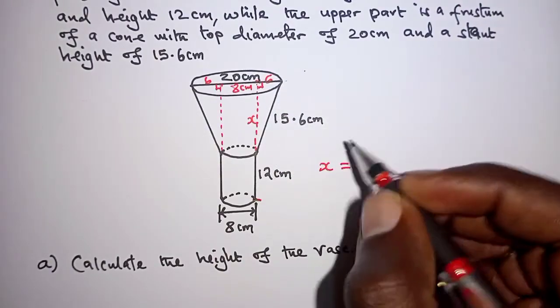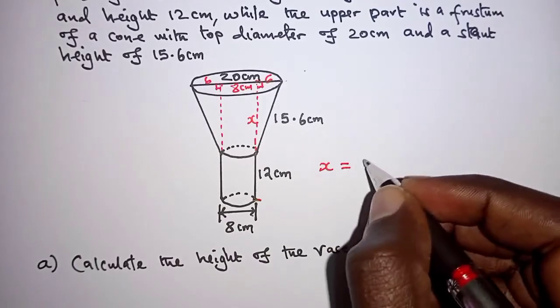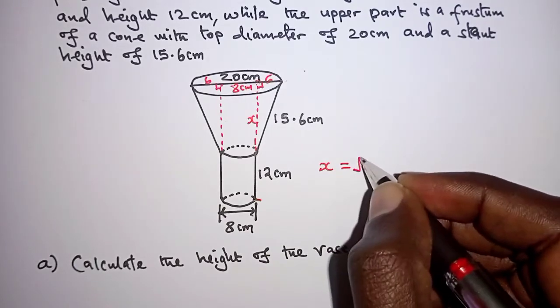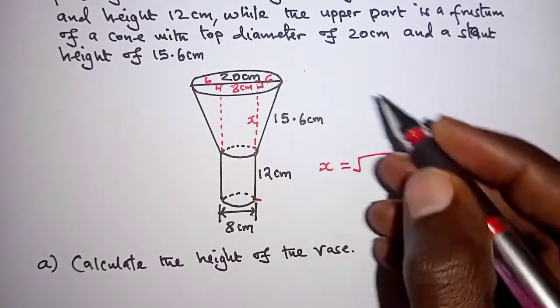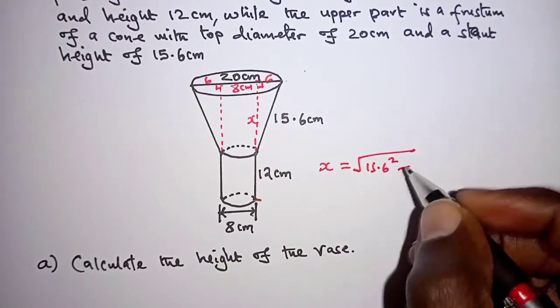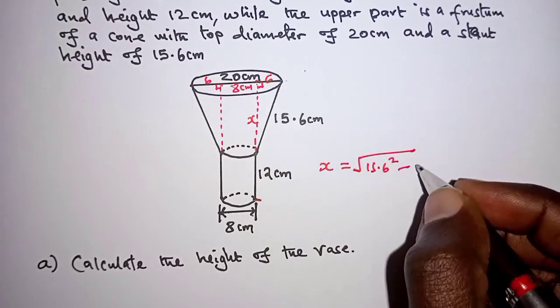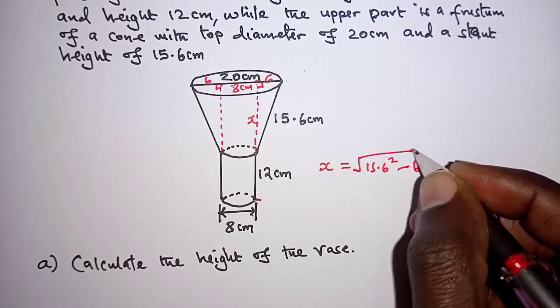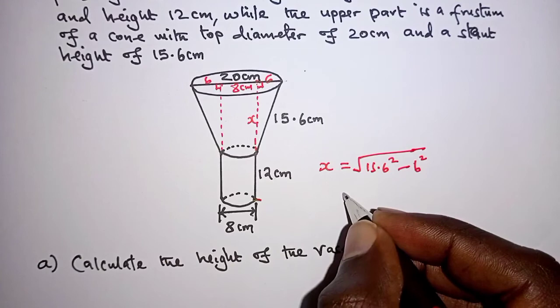we'll consider this right-angled triangle. Using Pythagoras theorem, we can therefore say x is equal to the square root of hypotenuse squared, which is 15.6 squared minus the base squared and that is 6 squared. And when you work out this,